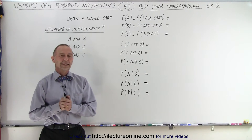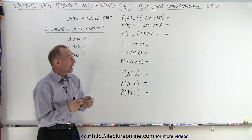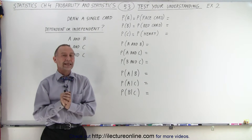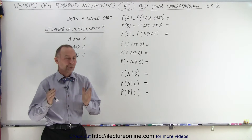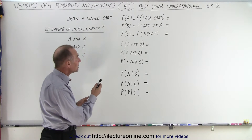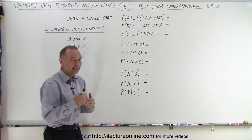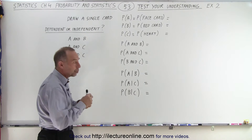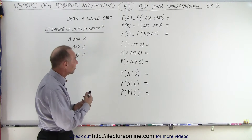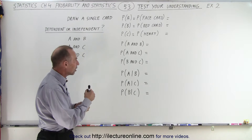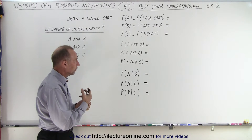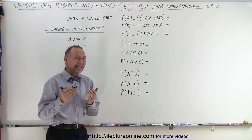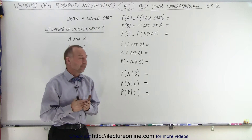Welcome to ElectronLine. In our next example, we're going to draw a single card from a deck, and we have three events. Event A is that we draw a face card. Event B is that we draw a red card. Event C is that we draw a heart. Are these independent or dependent events?